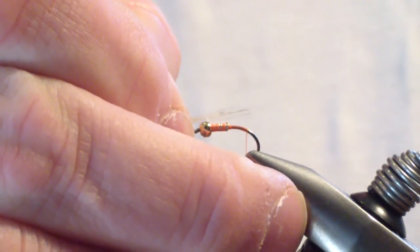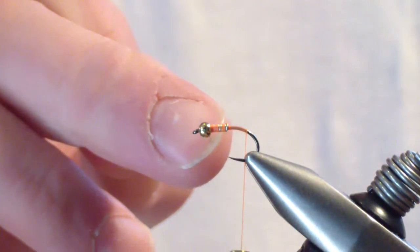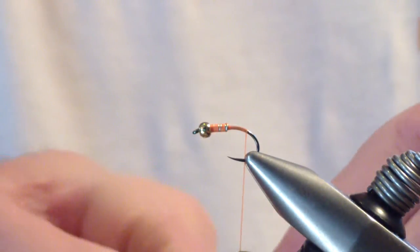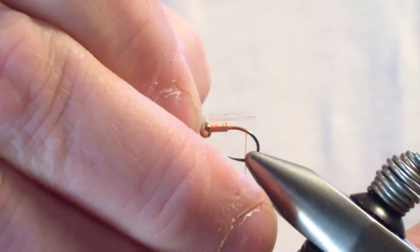And we're going to tie it in about shank length. Remember, it's going to look a little bit shorter because your shank on this hook is 3x short. So you don't want to go too long.